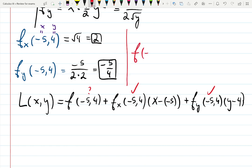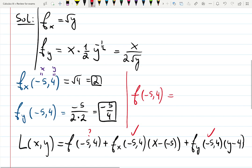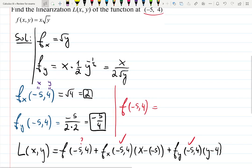f at (-5, 4) - that's the original function. Let's go back to the original. x is -5 times, I'm looking over here, square root of y is 2, so it's -10.